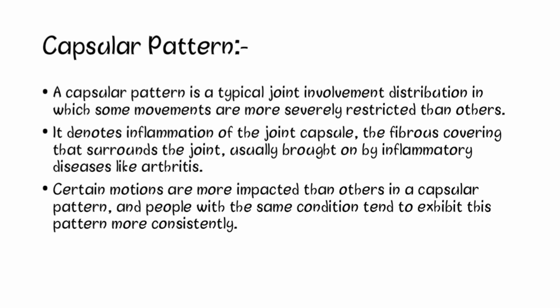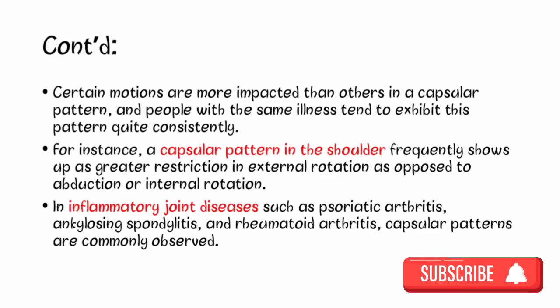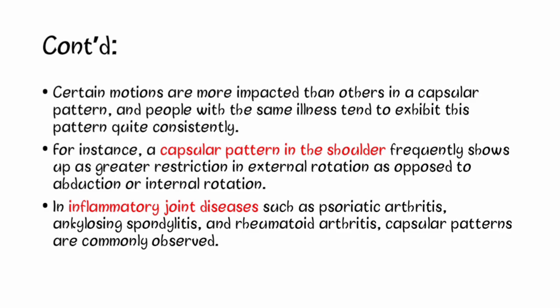Certain motions are more impacted than others in the capsular pattern, and people with the same condition tend to exhibit this pattern more consistently. For instance, a capsular pattern in the shoulder frequently shows up as greater restriction in external rotation as opposed to abduction or internal rotation. In inflammatory joint diseases such as psoriatic arthritis, ankylosing spondylitis, and rheumatoid arthritis, capsular patterns are commonly observed.